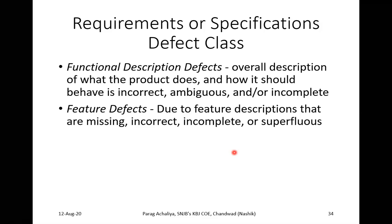Feature defects are due to feature descriptions that are missing, incorrect, incomplete, or superfluous. For example, Zoom's free version supports only a 40-minute lecture. If I schedule a meeting for more than 40 minutes, it will only provide the meeting for 40 minutes. This is the feature defect — the feature is limited to 40 minutes but attempting to schedule beyond that leads to incorrect or incomplete operation.